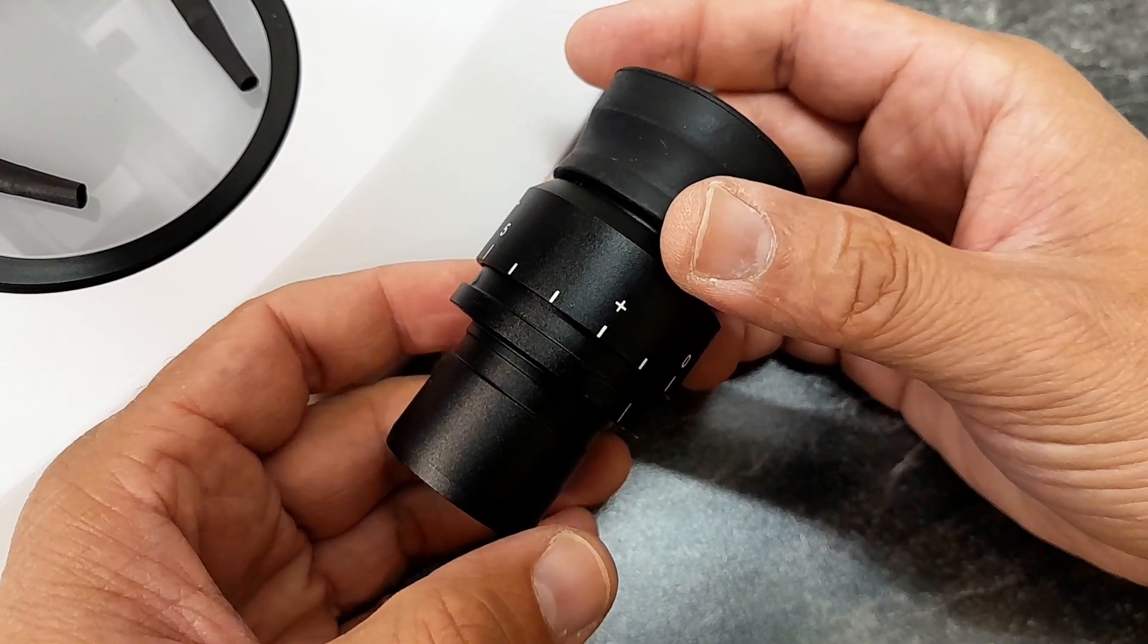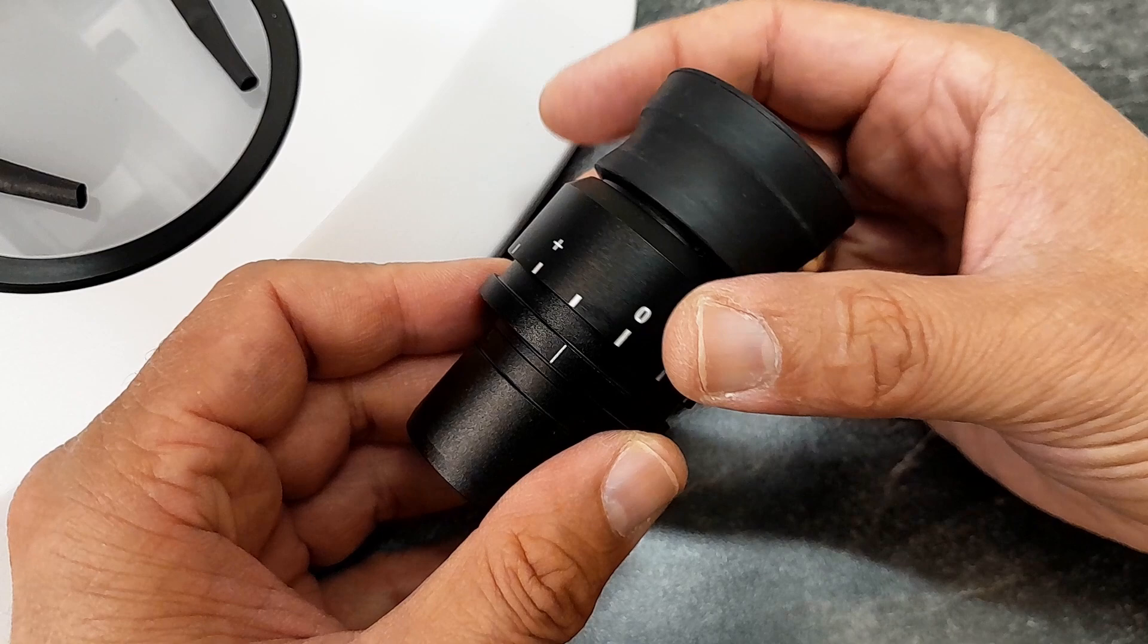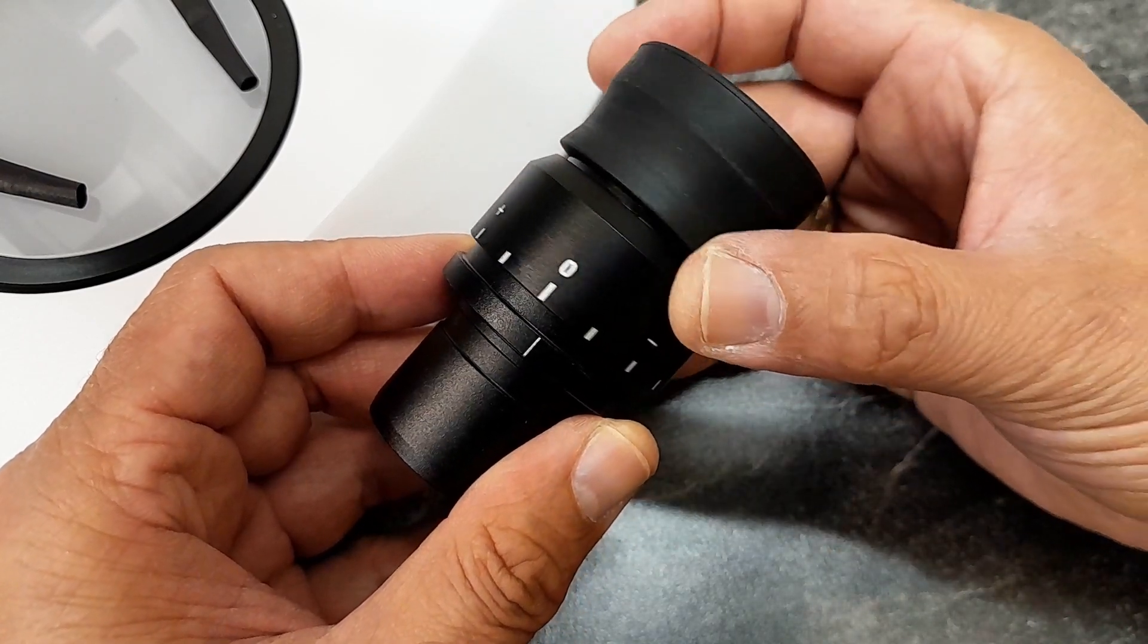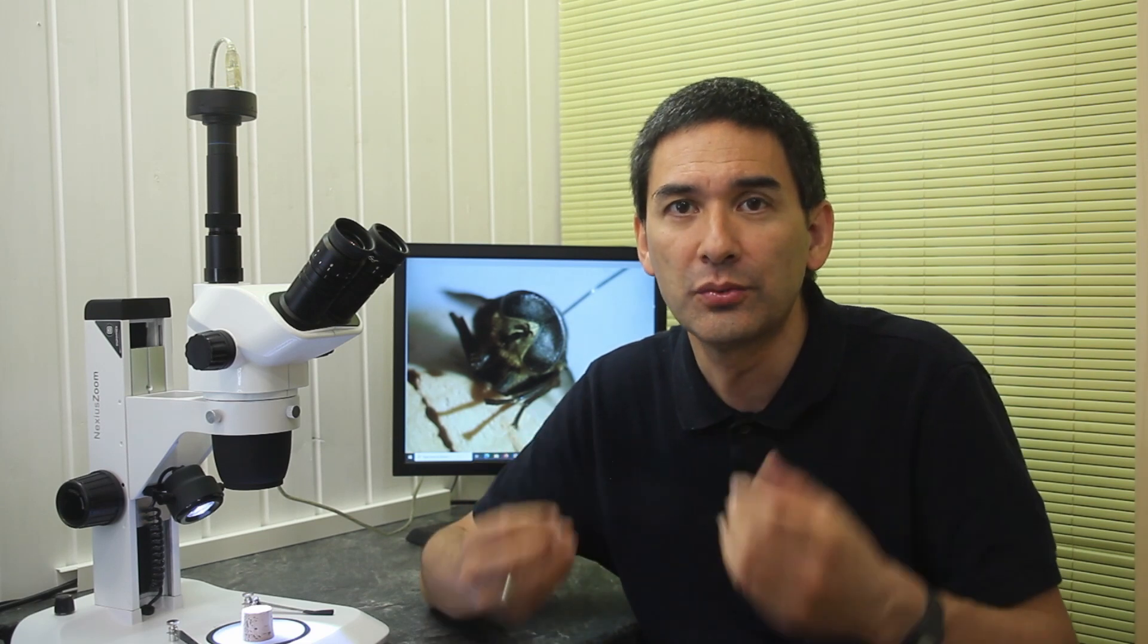The diopter adjustment is possible on each eyepiece separately by turning. They have a large eye relief, which means that they are also suitable for people who wear eyeglasses while looking through the microscope. In other words, you do not have to move very close to the front lens of the eyepiece to see a clear image.